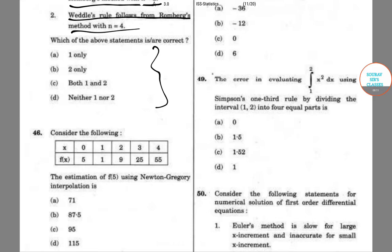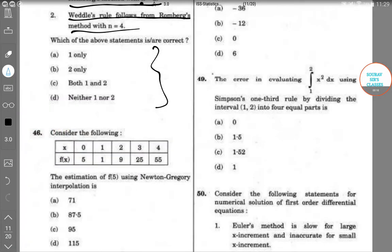In question number 46 we are asked to consider a table that is given as follows. The estimation of F(5) using Newton-Gregory interpolation is to be calculated. So let's see how we approach this.